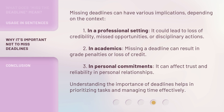Missing deadlines can have various implications, depending on the context. 1. In a professional setting, it could lead to loss of credibility, missed opportunities, or disciplinary actions. 2. In academics, missing a deadline can result in grade penalties or loss of credit. 3. In personal commitments, it can affect trust and reliability in personal relationships. 4. Understanding the importance of deadlines helps in prioritizing tasks and managing time effectively.